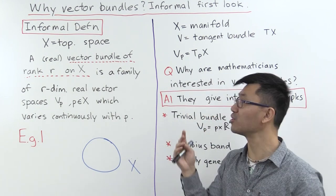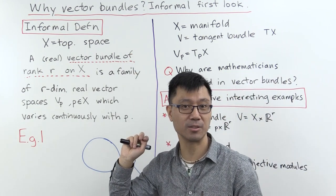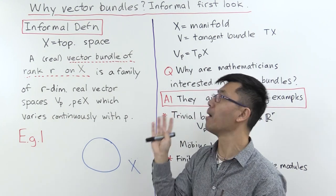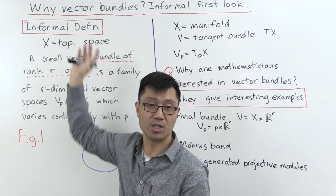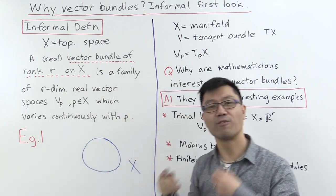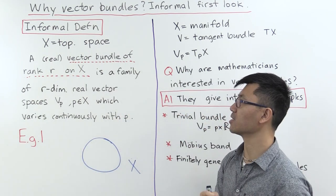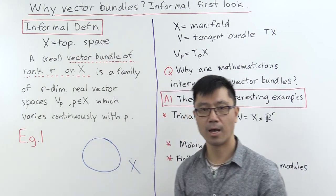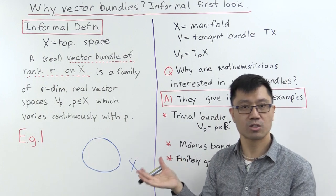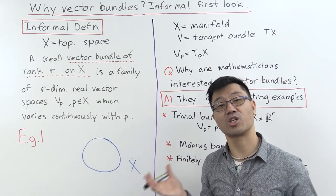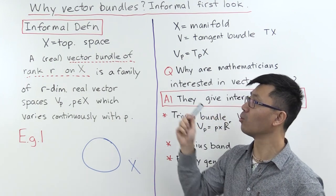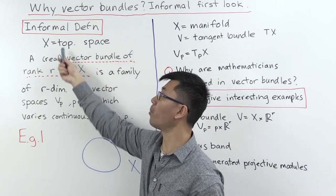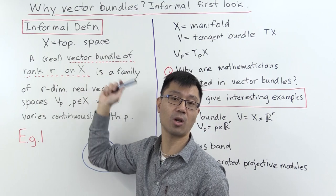To start off, I should define what I mean by a vector bundle. I won't give a full or proper definition here, but I'll give you an informal definition which gives you a good feel for what that object is. The starting point is going to be a topological space. There are lots of different contexts in which you can talk about vector bundles, and we'll just look at the case of the topological setting, in the category of topological spaces.